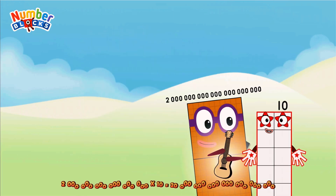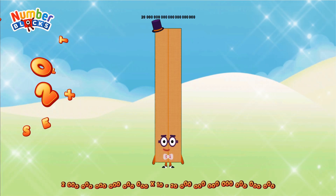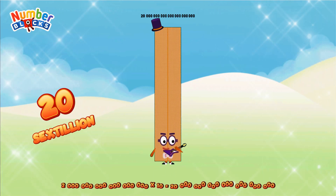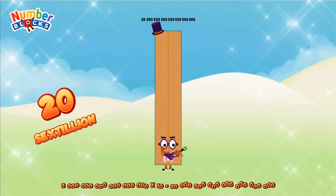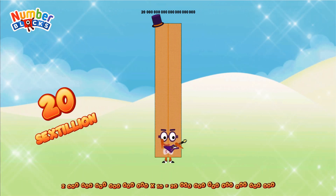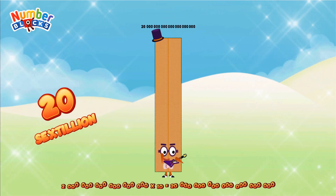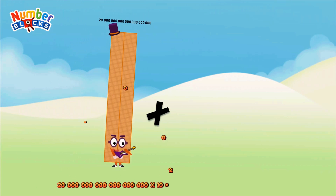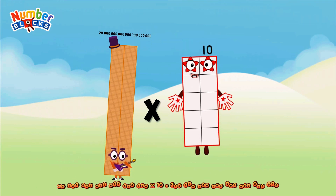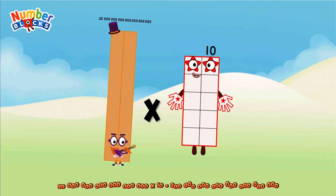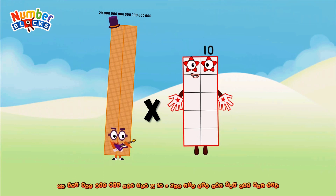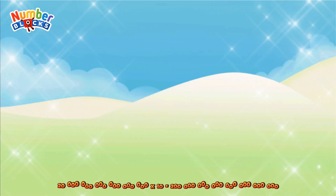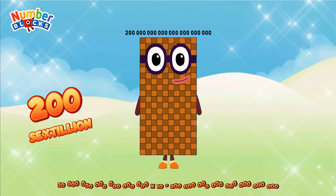Twenty sextillion multiplied by ten equals Two hundred sextillion.